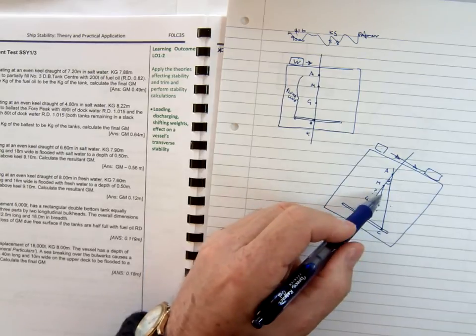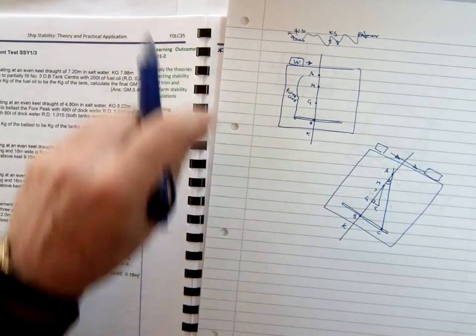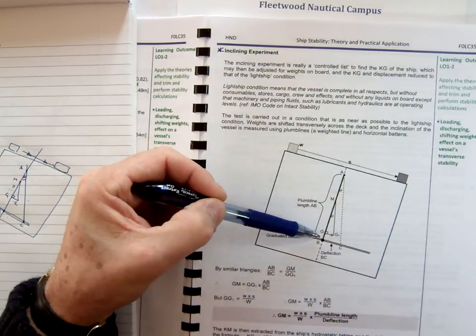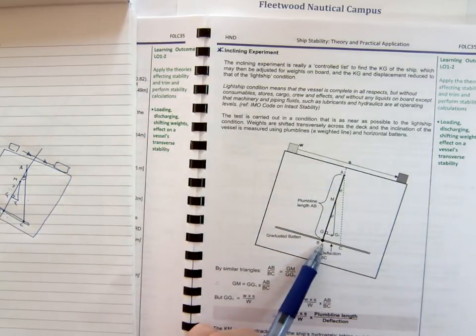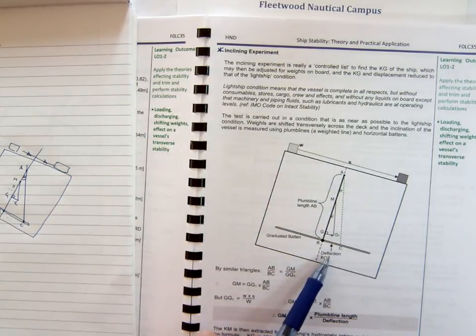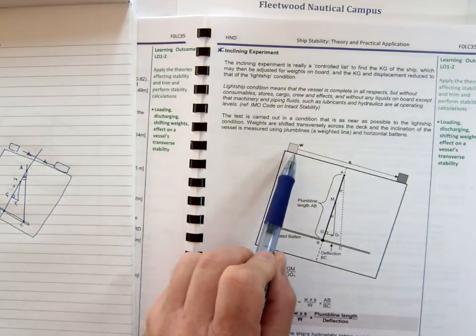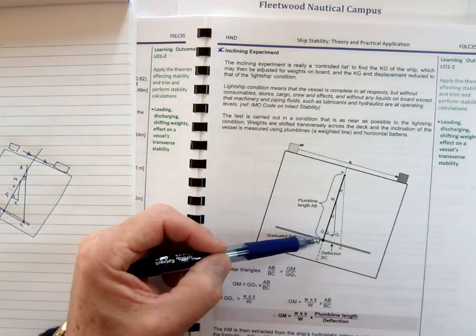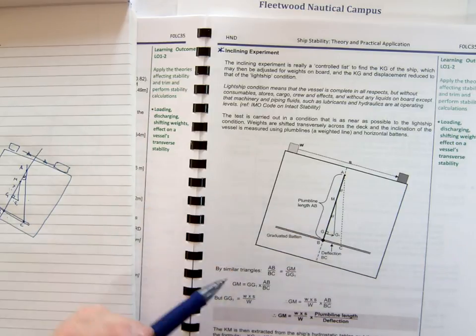Because these are similar triangles, we can work out the gm of the vessel. In the book here, we can see that A to B is our plumb line length. B to C is the deflection that we've talked about. There's our pattern. There's our weight going across. And we've got the two similar triangles, both right-angled triangles.